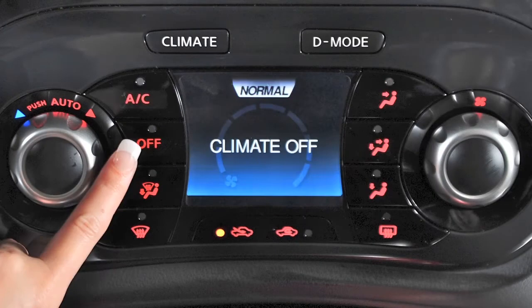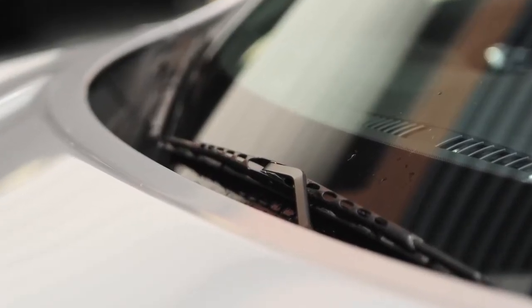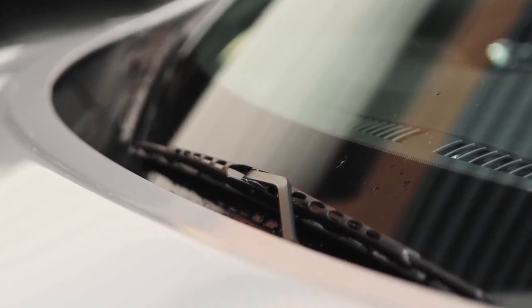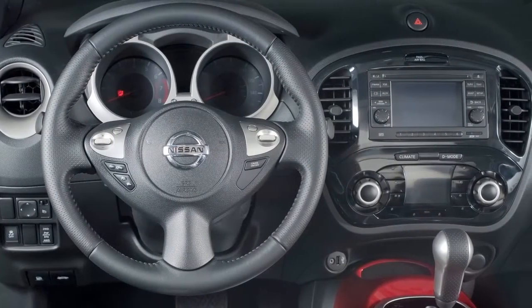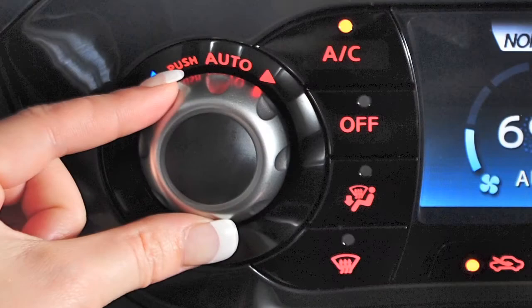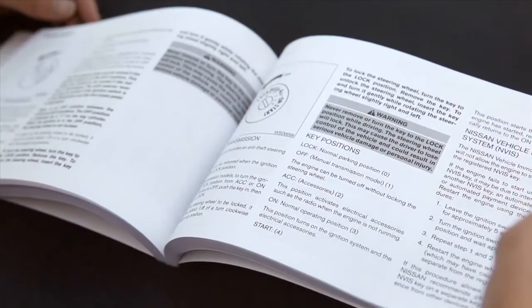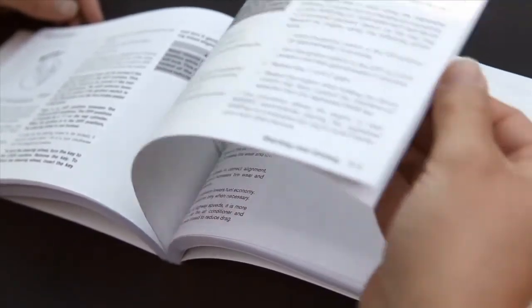Press the off button to turn the system off. There is a temperature sensor located on top of the dashboard, near the windshield, that helps regulate the automatic climate control settings. Please keep this area clear of papers and other materials. Some of the climate controls are not functional when the ICONS system is in Drive mode, but they can be accessed by pressing the Climate button. The temperature knob remains functional in both modes. Please refer to your Owner's Manual for more information on climate control systems.